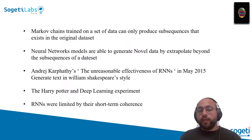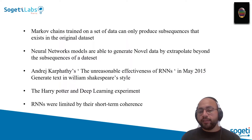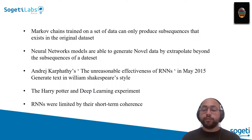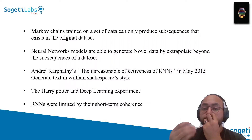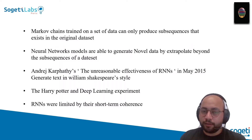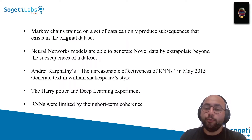RNNs are widely used today. The first to make RNNs really famous was the project by Andrej Karpathy, 'The Unreasonable Effectiveness of RNNs,' in May 2015, who was able to generate text in William Shakespeare's style. He simply trained an RNN on all of Shakespeare's books and produced text in the same style. There is another project — the Harry Potter and Deep Learning Experiment — where a group of students trained an RNN on all the Harry Potter books and tried to predict the next chapters. It was amazing — go and check it out.